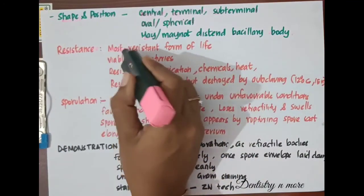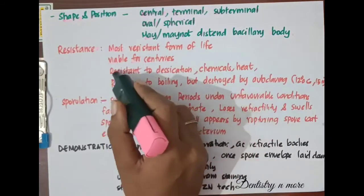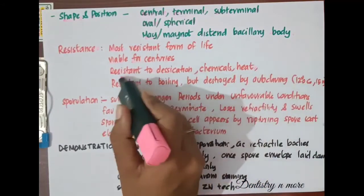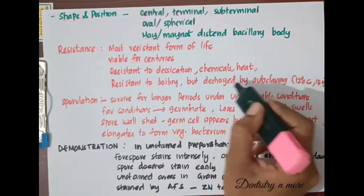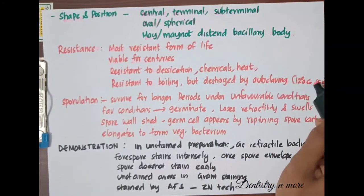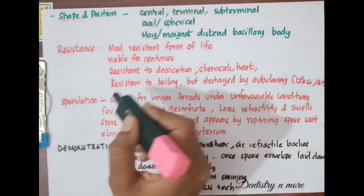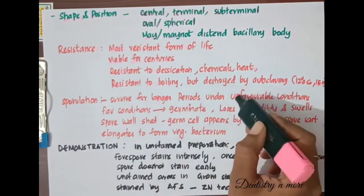Moving on to the resistance of bacterial spores: they are the most resistant forms of life and can stay viable for centuries. They are resistant to desiccation, chemicals, and heat. They are resistant to prolonged boiling, but spores of all medically important species are destroyed by autoclaving at 120 degrees Celsius for 15 minutes. We should ensure that all methods of sterilization and disinfection can kill the spores. Sporulation helps bacteria survive for long periods under unfavorable conditions.